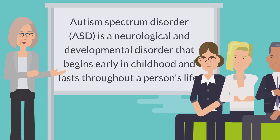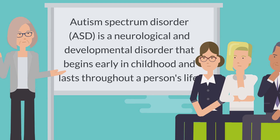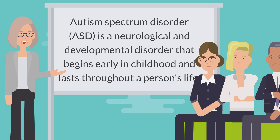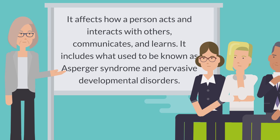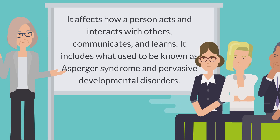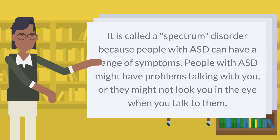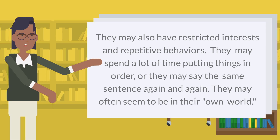Autism spectrum disorder, ASD, is a neurological and developmental disorder that begins early in childhood and lasts throughout a person's life. It affects how a person acts and interacts with others, communicates, and learns. It includes what used to be known as Asperger's syndrome and pervasive developmental disorders. It is called a spectrum disorder because people with ASD can have a range of symptoms. People with ASD might have problems talking with you, or they might not look you in the eye when you talk to them. They may also have restricted interests and repetitive behaviors.